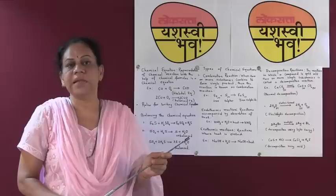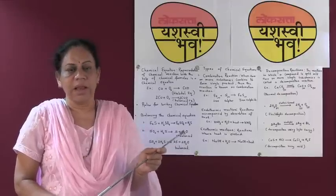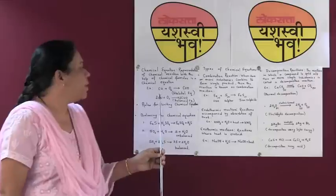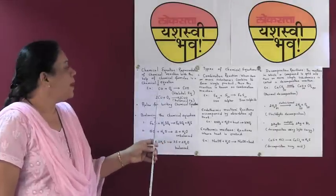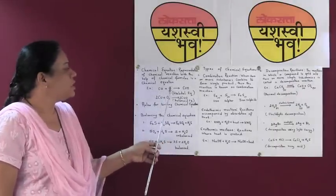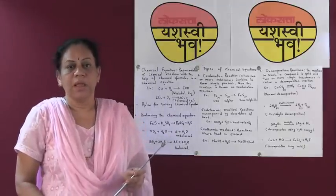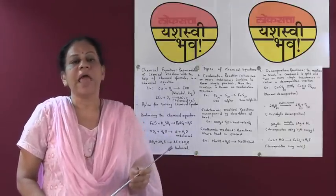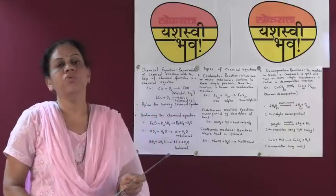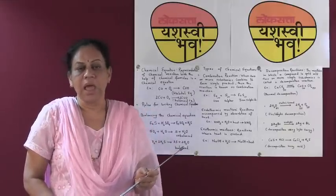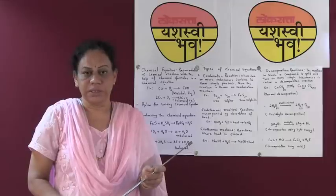Let us take another simple example of copper. Copper combines with oxygen to give copper oxide. These reactions can be represented using chemical formulas and they are called chemical equations.